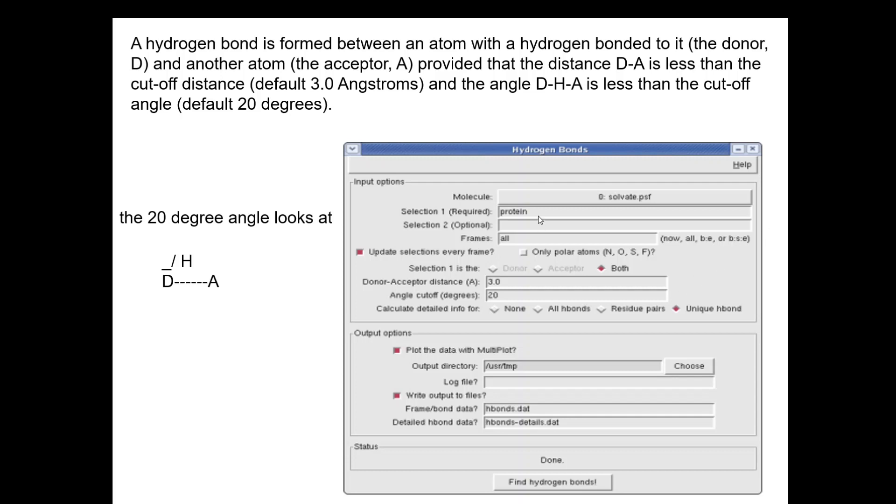The plugin is very easy. They also have a command line interface but since we have a graphical user interface it's easier. Here you choose your molecule. Here you choose the first selection which is called protein and the second one is optional. If you keep it empty it will calculate the intramolecular hydrogen bonds in the protein structure. If you write protein in the first selection and water in the second selection, you're calculating the hydrogen bonds between protein and water. Here you decide on the frame number and which polar atoms. You can plot immediately your output file or write it to a hydrogenbond.dat text file.